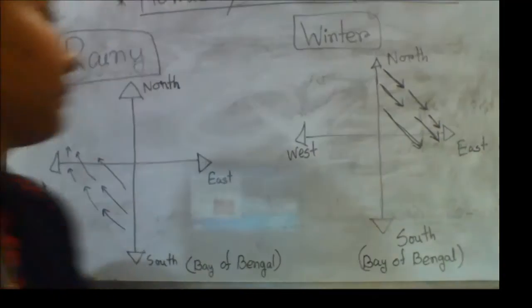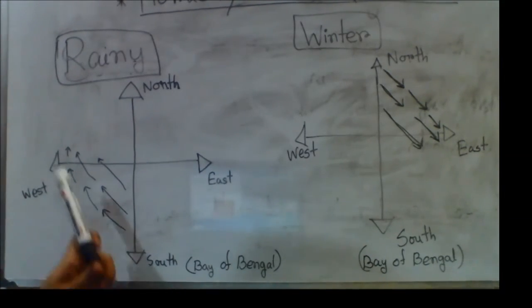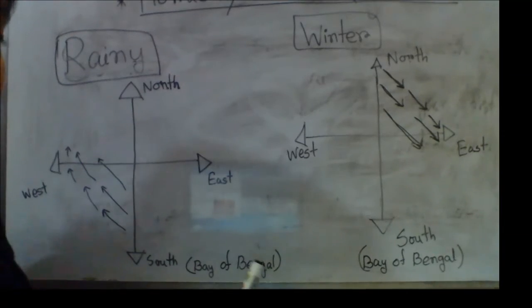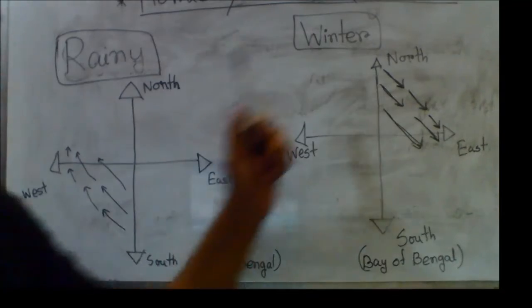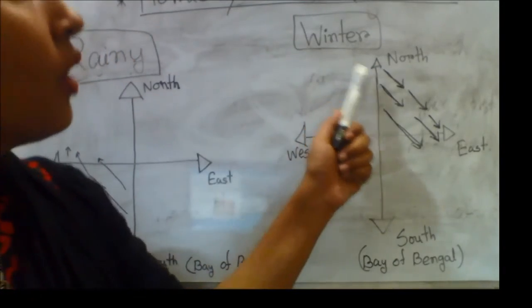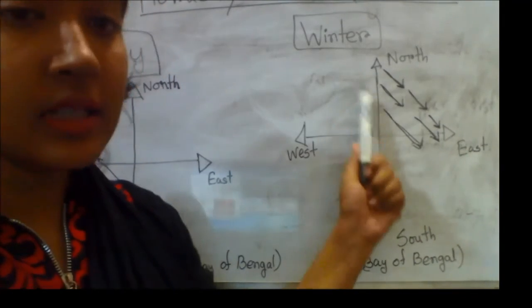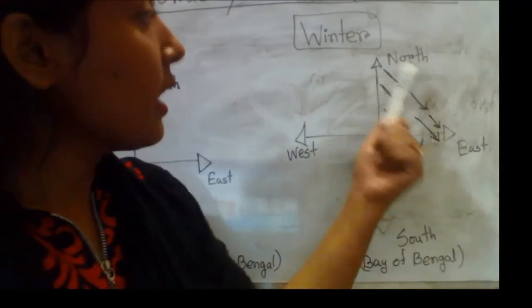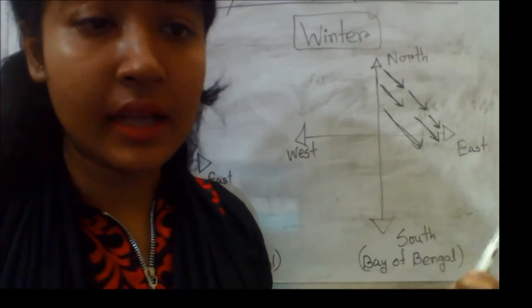Now, in rainy season wind comes from south direction to west direction. It contains a lot of moisture with it, and it causes heavy rainfall in Bangladesh. And in winter season wind comes from north direction to east direction, and it contains less moisture with it. And this is the main reason that in winter season we didn't face any kind of heavy rainfall.